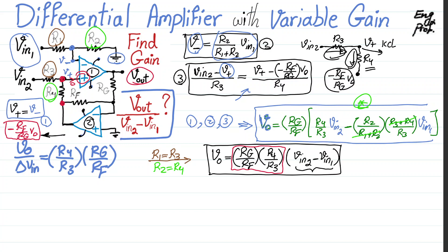I hope this example is helpful in showing how you can find the voltage gain for a scenario like this, and how to properly set resistors for a differential amplifier with variable gain.